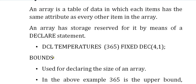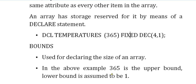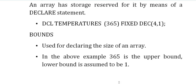In Arrays we will have an upper bound and a lower bound. Bounds are used for declaring the size of an array. In the above example, 365 is the upper bound, and by default the lower bound is 1. So it starts with 1, 2, 3, and so on up to 365. Different kinds of data you can store in this variable — temperature of 1 you can store something, temperature of 2 you can store some value, and so on up to temperature of 365. That's why 365 is the upper bound and by default the lower bound is 1.